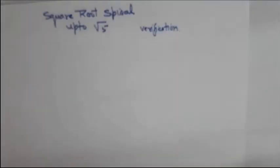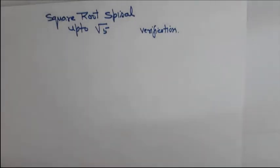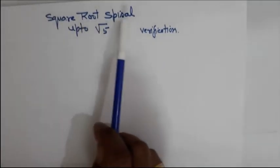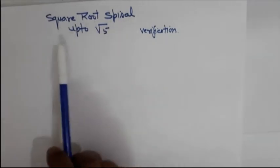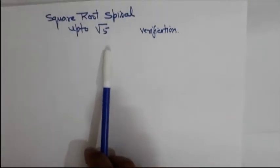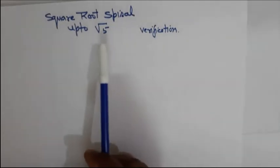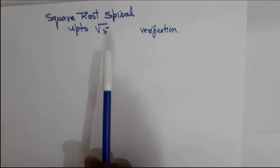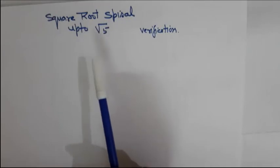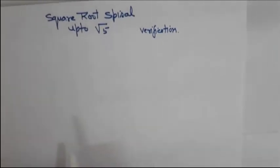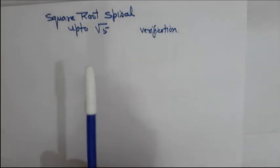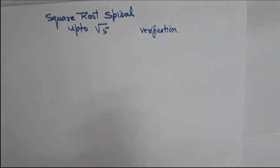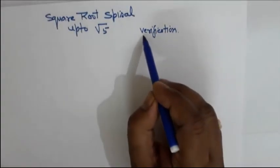Today we will learn how to make the square root spiral up to square root of 5 as an example. The same steps you have to repeat for further values like square root of 7, square root of 11, square root of 20, or as far as you want to go. For this example, I will make up to square root of 5 and we will also do verification along the way, which is very important.